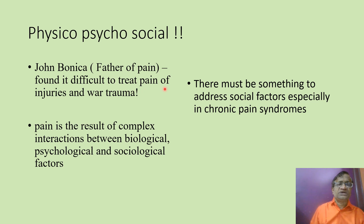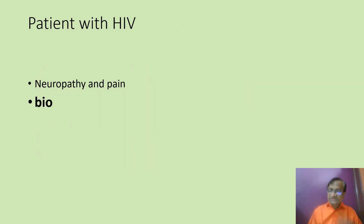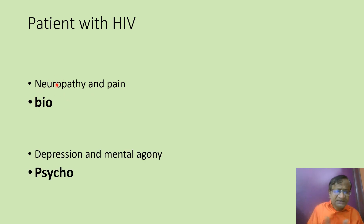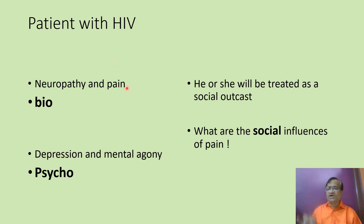John Bonica, the father of pain medicine, found it difficult to treat pain from injuries and war trauma, and emphasized that there must be something addressing all these factors — especially in chronic pain. As a clinical example: a patient with HIV neuropathy has biological pain, but also depression and mental agony (psychological), plus social ostracism (social) — so pain has a bio-psycho-social influence. Similarly, a cancer cervix patient has tissue damage (biological), severe depression on receiving the diagnosis (psychological), and different pain experiences depending on their social environment.